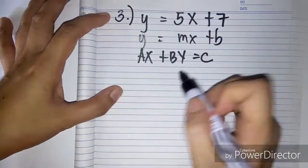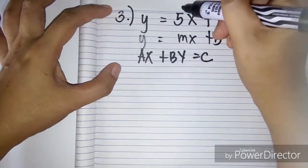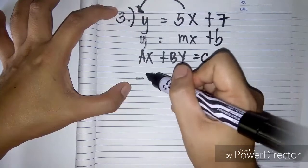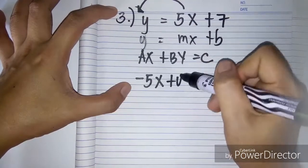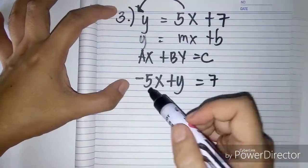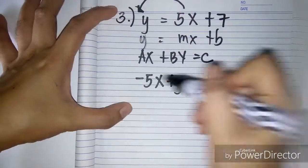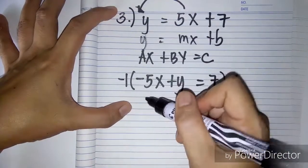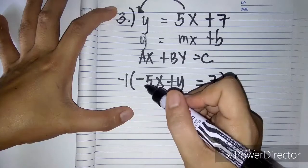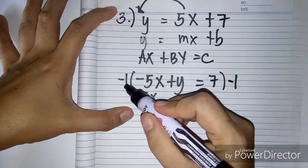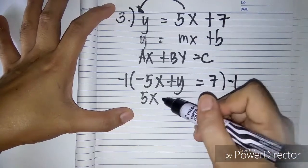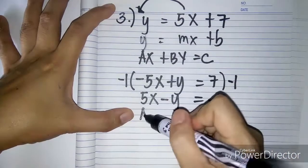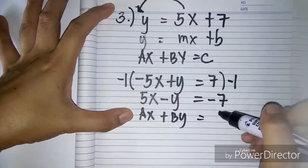The ax and by should be on the left side together. So we transpose 5x to the other side — positive 5x changes sign — giving us negative 5x plus y equals 7. But we have a negative leading term, so to make it positive we multiply both sides by negative 1. Negative 1 times negative 5x equals positive 5x, negative 1 times positive y equals negative y, and negative 1 times 7 equals negative 7. So now it is in the form of ax plus by equals c.